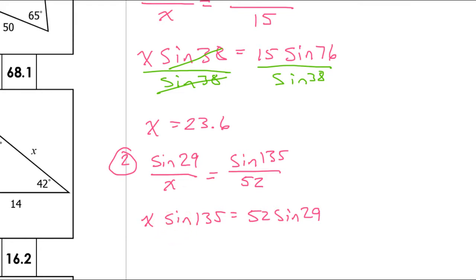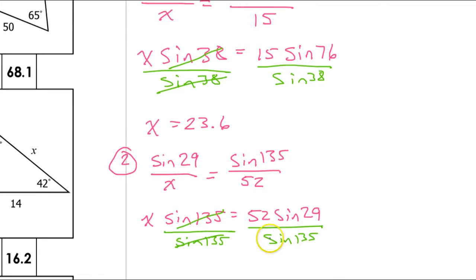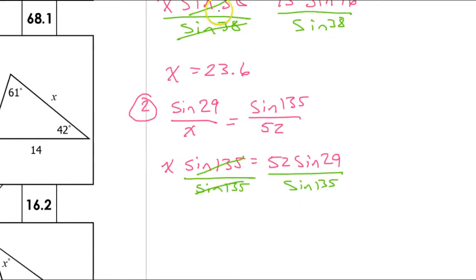X times the sine of 135 should equal 52 times the sine of 29 degrees. To get x by itself, I am going to divide. So I'm going to divide both sides by sine 135. Alright, that way these are going to cancel each other out. And that should give me the final answer.